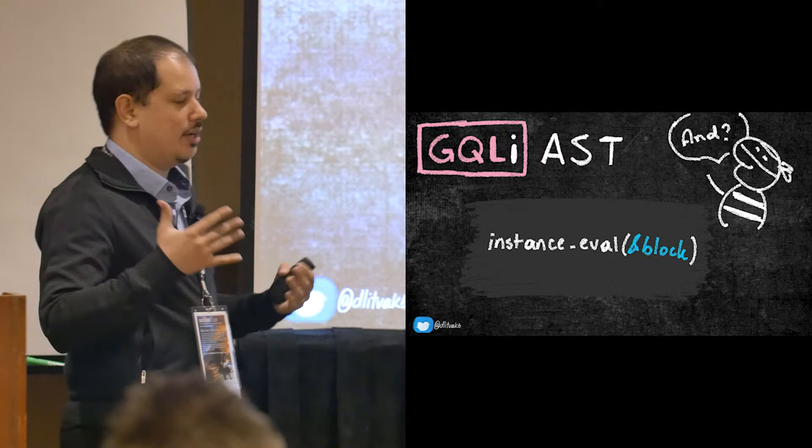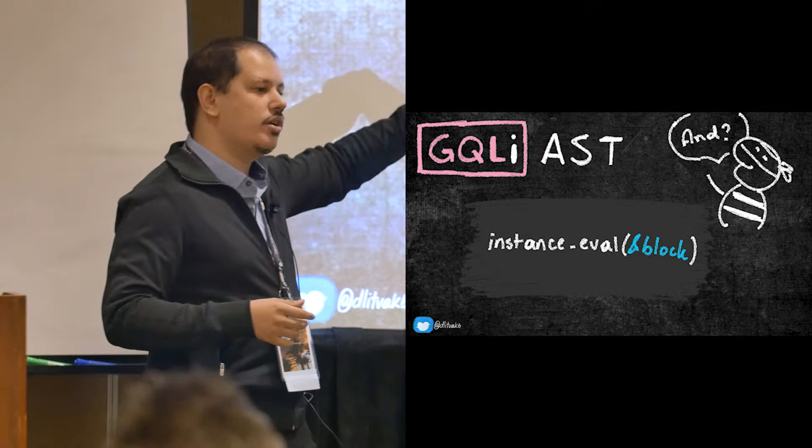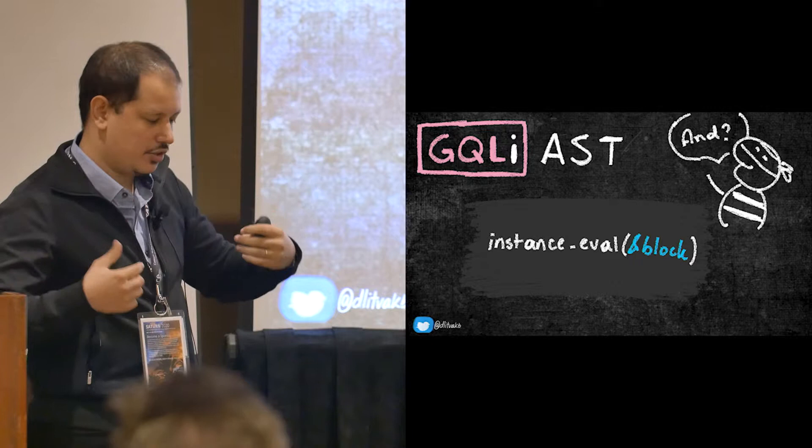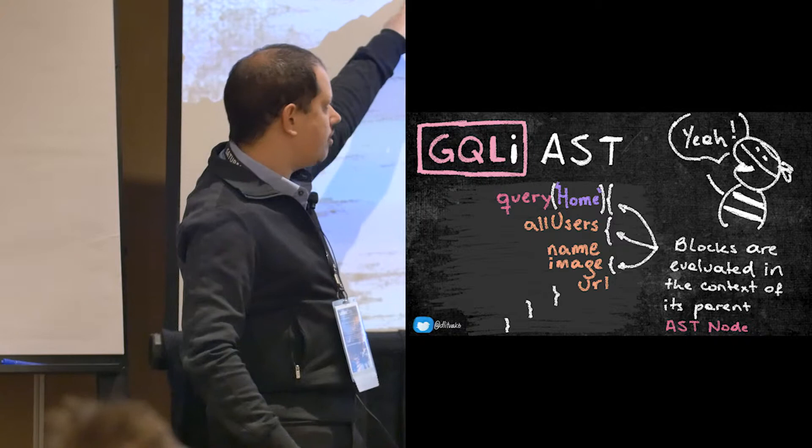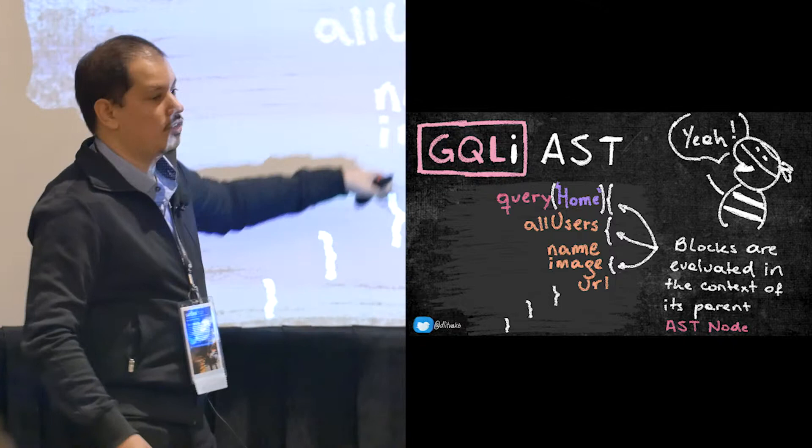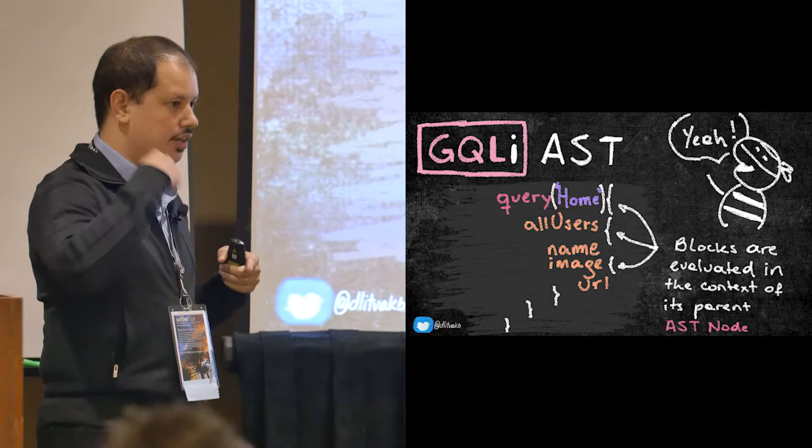Then, I change the evaluation context of that block, which is the thing inside the curly braces, into the current executing object. So now, I'm evaluating that block as part of the current, as part of its parent node. So here, for example, order from here to down, it's executed within the context of the query, from here down within the context of all users, and from here down within the context of image. And basically, from that way, I get all the relationships in the tree.